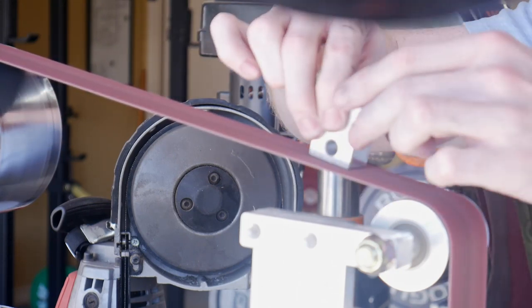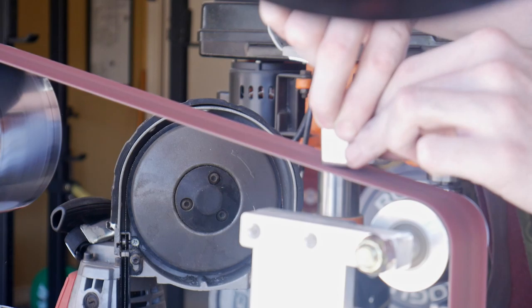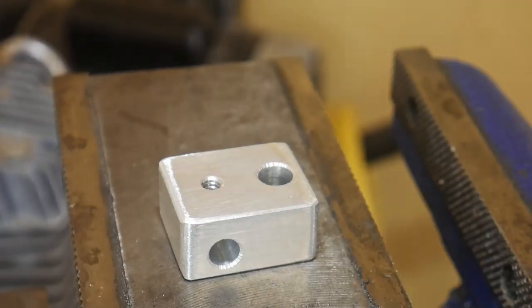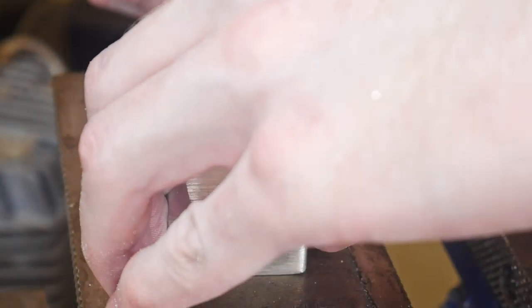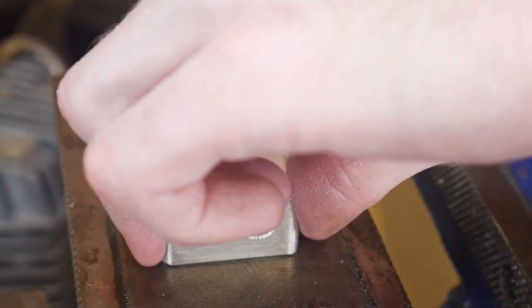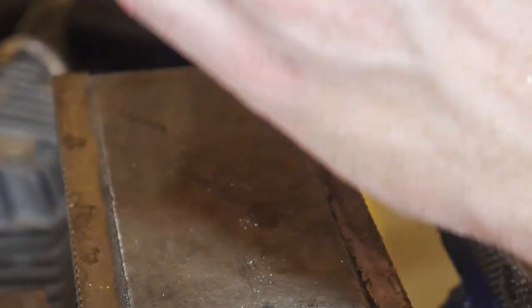The last small operation we'll do to this fixture is to make sure that there are no burrs inside the hole for the scribe left behind from drilling and tapping that set screw hole.